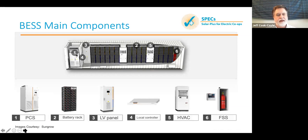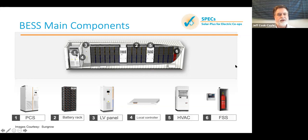Here are the major components of a battery energy storage system. The PCS, also known as the inverter, is the power conversion system. The batteries are the black columns — those are racks with modules of battery cells. The batteries need to be converted to the output voltage of the PCS. There's also a control system and a fire suppression system.